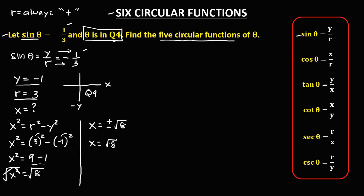We can simplify square root of 8: √8 = √4 × √2, so x = 2√2. This is now the value for x. Since we have all three values — x, y, and r — we can find the remaining five circular functions of theta.